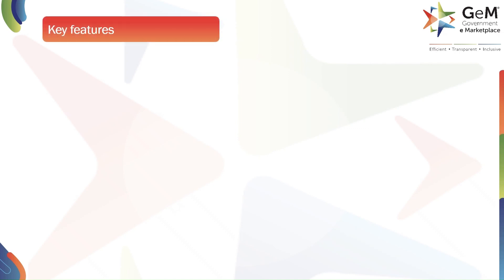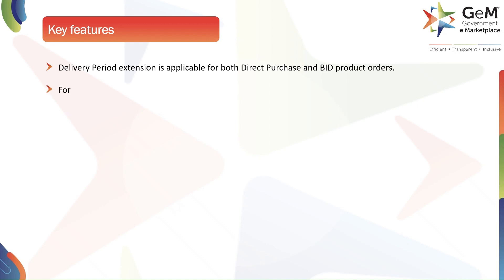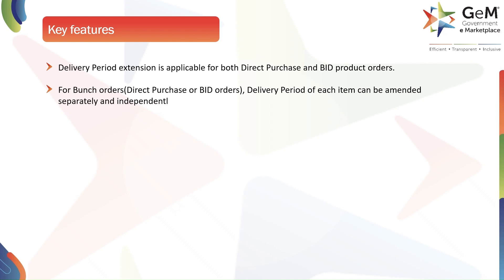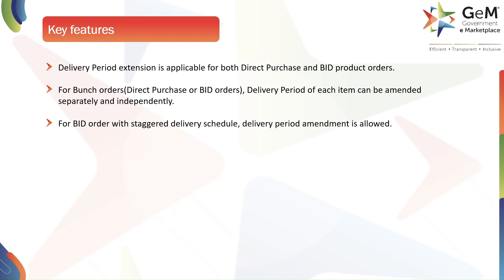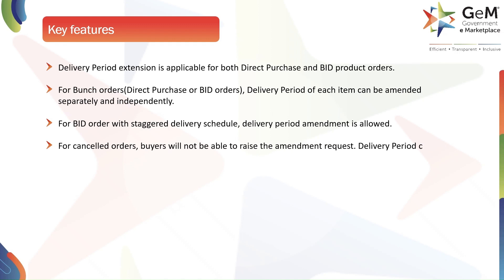Let's dive into the key features of delivery period extension. Delivery period extension is applicable for both direct purchase and bid product orders. For bunch orders — direct purchase or bid orders — the delivery period of each item can be amended separately and independently. For bid orders with staggered delivery schedule, delivery period amendment is allowed. For cancelled orders, buyers will not be able to raise the amendment request.